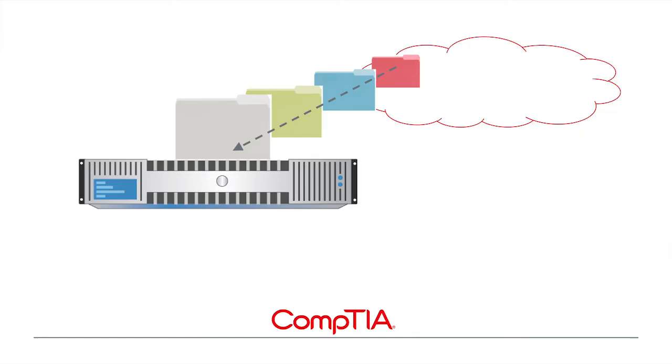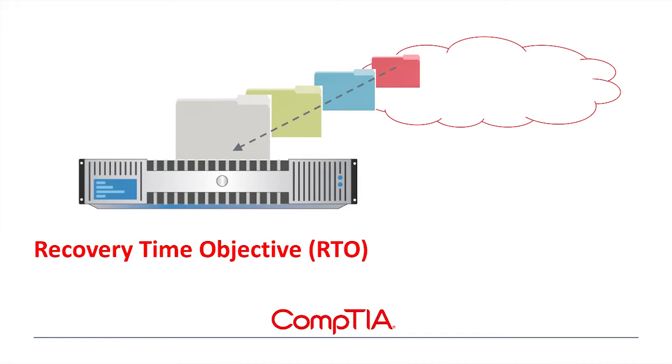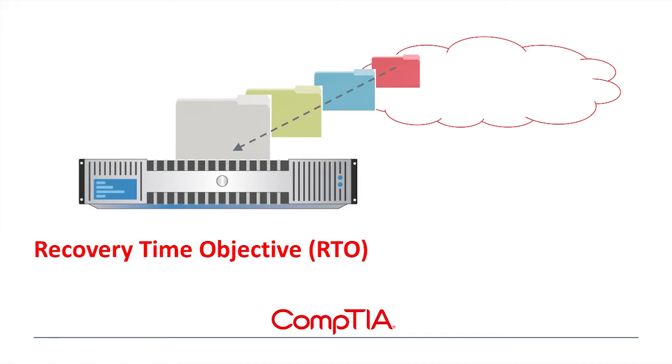How long can they afford to be down? How long can they operate at a remote site in the event that their building is unavailable? When creating a business continuity and disaster recovery plan, there are two key terms: RPO, or recovery point objective, and RTO, or recovery time objective. Recovery point objective is the amount of data that a client can lose without doing serious risk to their business.